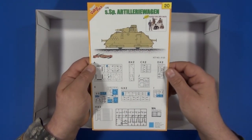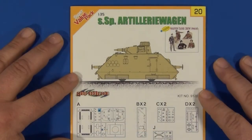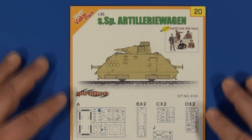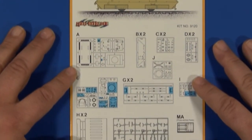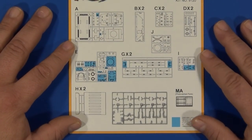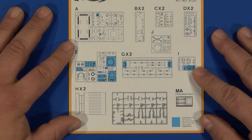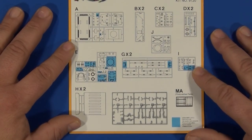Here's a quick run through of the instruction sheet. On the front page we have the sprue callouts, and everything shaded in blue are parts that are not used, so you will have some pieces left over in the end.